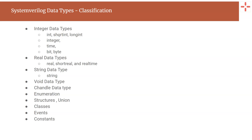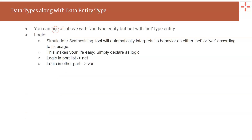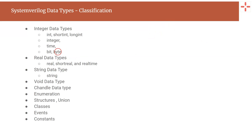So that is all about the category of data types in SystemVerilog. Now, in an ideal situation, the data types need to be declared along with the data entity type — either a net type or a variable type. You can use all the data types with a var type or variable type entity, but not all of them are allowed with a net type entity such as wire or supply0. In general, you can use the integer type and real type along with a net type category, and enumeration, structures, and union can also be declared with net type entities.